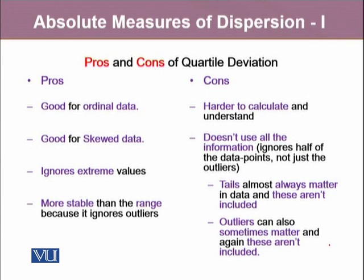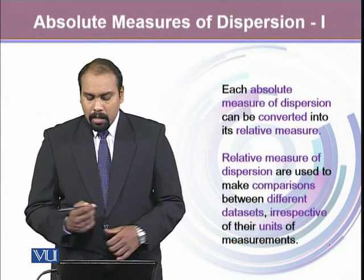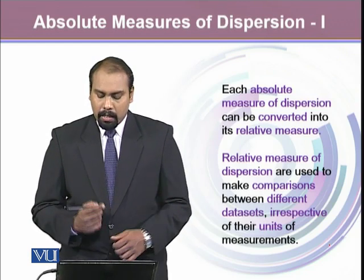There are a few pros and cons of quartile deviation. It is good for ordinal data, good for skewed data, and it ignores extreme values as seen in the histogram example. It is more stable than the range because it ignores outliers. Its demerits include that it is harder to calculate since computing quartiles is laborious, and it does not use all the information because it ignores the tails of the data. Each absolute measure of dispersion can be converted into its relative measure of dispersion, which is used to make comparisons between different datasets irrespective of their units of measurement.